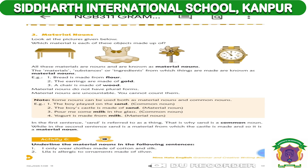Some nouns can be used both as material nouns and common nouns. For example: 'The boy played on the sand' — here 'sand' is a common noun. But 'The boy's castle is made of sand' — here 'sand' is a material noun. So you can see the meaning of the sentence determines whether sand is a common noun or a material noun.